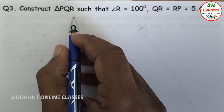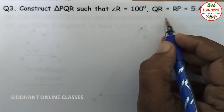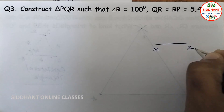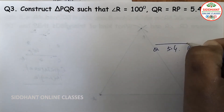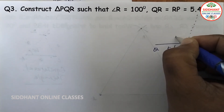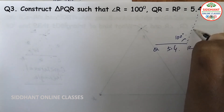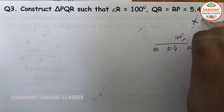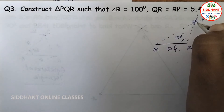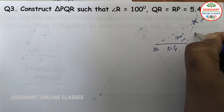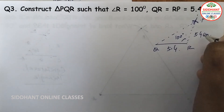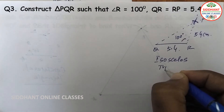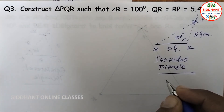Question number three: Construct Triangle PQR such that Angle R is 100 degrees and QR equals RP equals 5.4 centimeters. First we draw QR with 5.4 centimeters; from R we take 100 degrees, and RP is 5.4 centimeters — we take that with a compass and make an arc to get point P, then join the points to get a triangle.